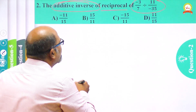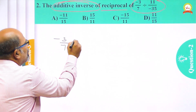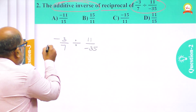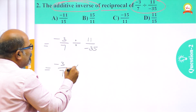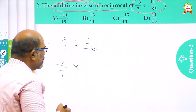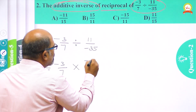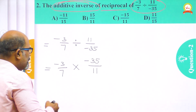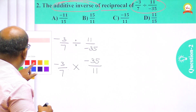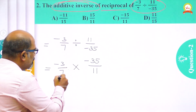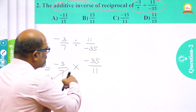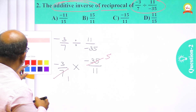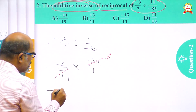First I take the given expression: minus 3/7 divided by 11/minus 35. The first step is replacing the divide symbol with multiplication and taking the reciprocal of 11/minus 35, which becomes minus 35/11. Then I can make a cancellation between 7 and 35 because 7 is a common factor — 7 ones are 7 and 7 fives are 35. On simplification: 5 threes are 15, giving minus 15.